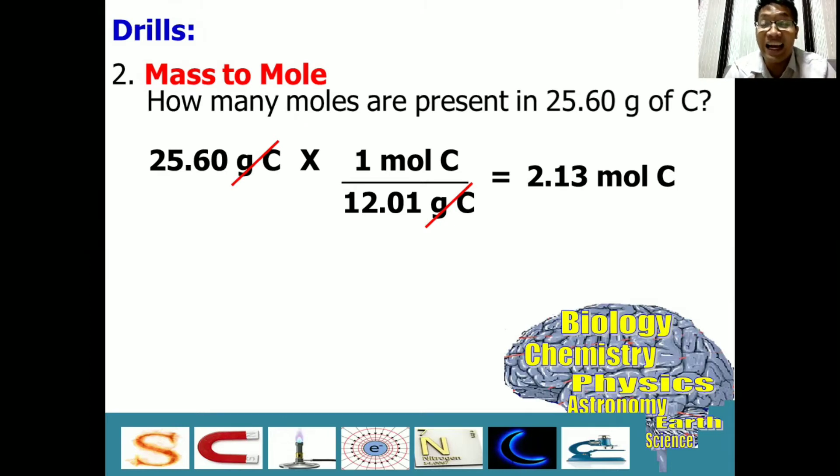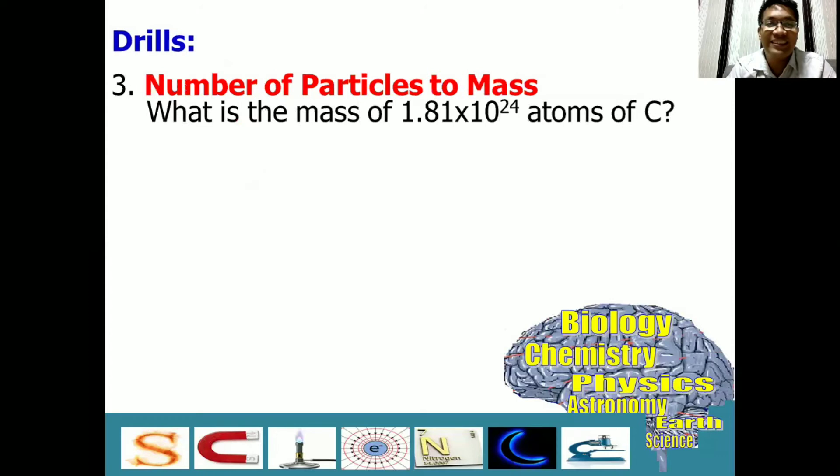Remember that we need to properly label or use the correct unit. So, again, our unit here is mole. This implies that for every 25.60 grams of carbon, you always have 2.13 moles of carbon. Let's have drill number 3. For drill number 3, we have to convert number of particles to mass.